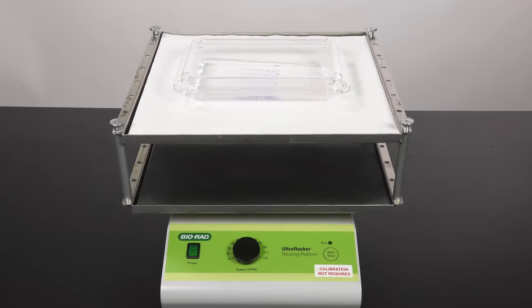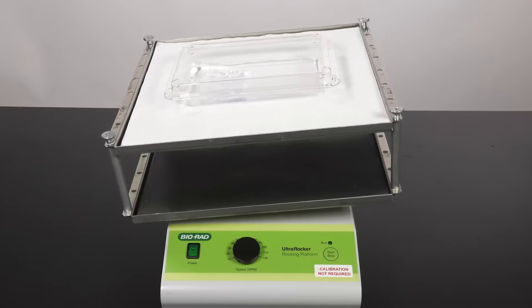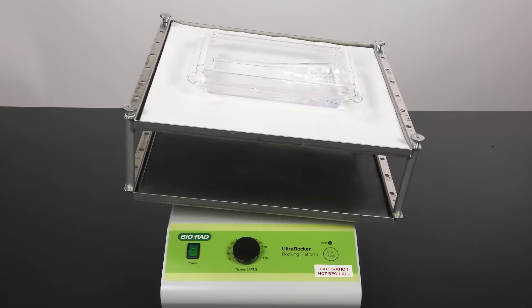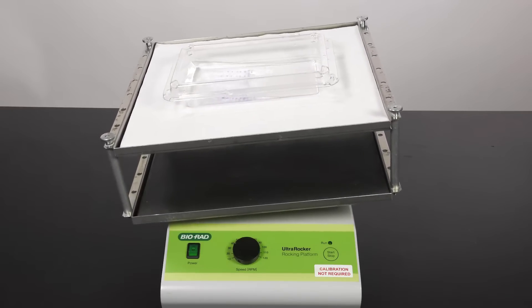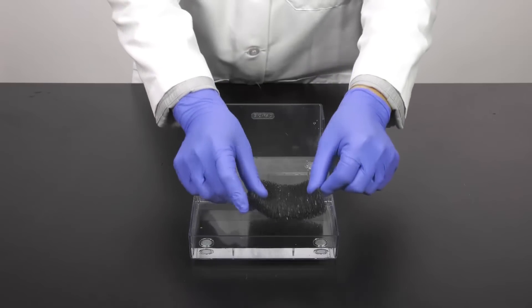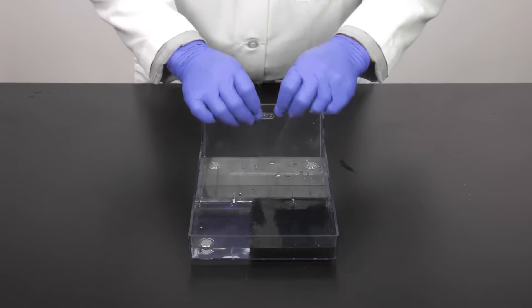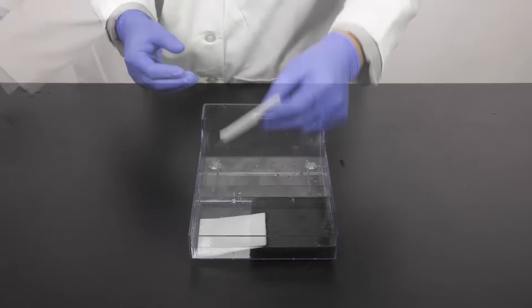After you have removed your gel from the gel cassette, equilibrate the gel in a tray with transfer buffer for 15 minutes on a rocking platform. Pre-soak blotting paper and fiber pads in the transfer buffer and ensure complete coverage.